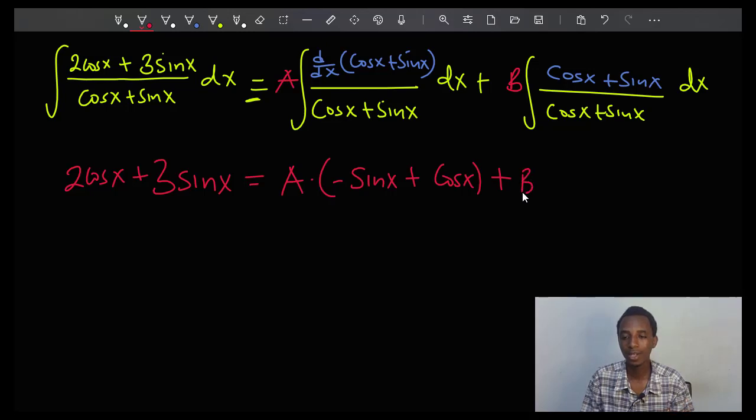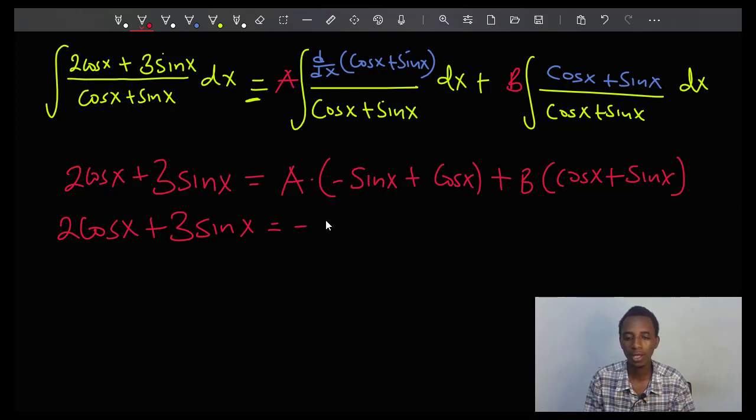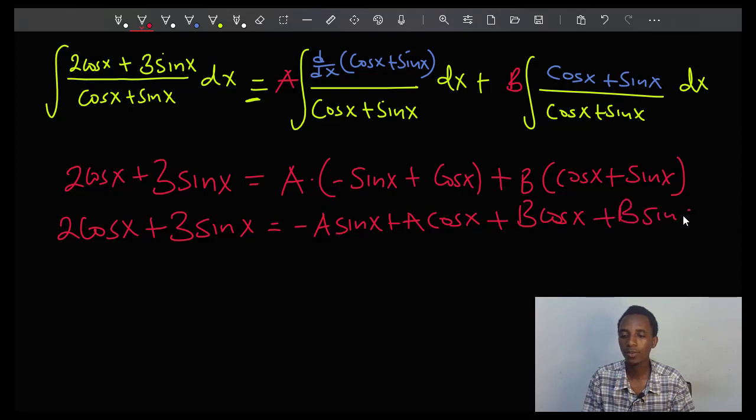plus B times cos x plus sin x. So we have 2cos x plus 3sin x equals... I'll collect the sines and cosines together, so I have here negative A sin x plus A cos x plus B cos x plus B sin x.